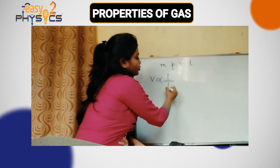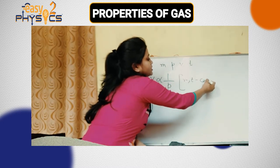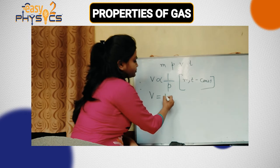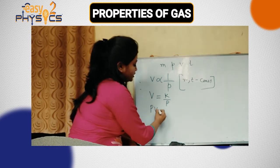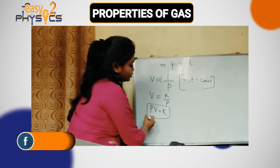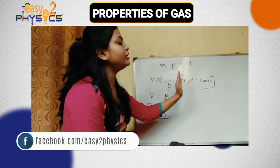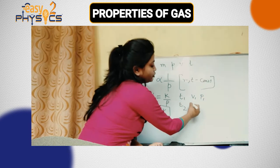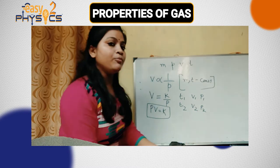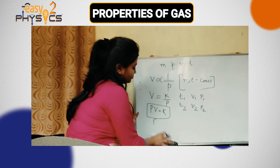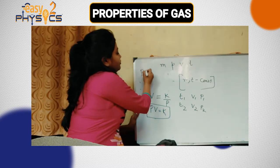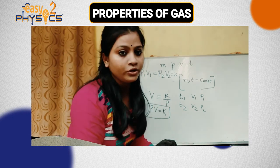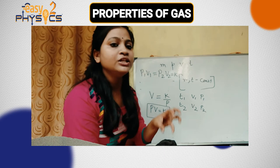If we write it, V equals to k divided by P, or P times V equals to k. That means at different pressures, the product P1V1 is equal to P2V2, which equals k.